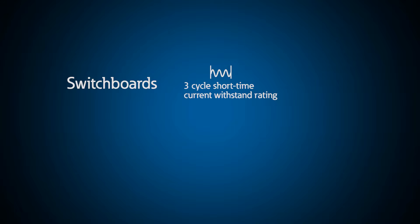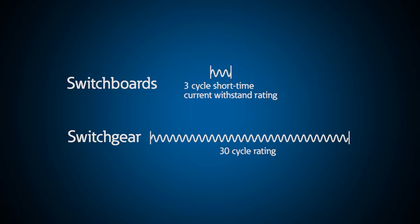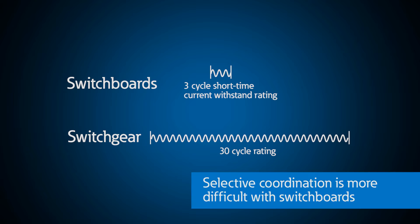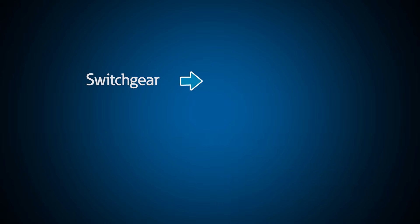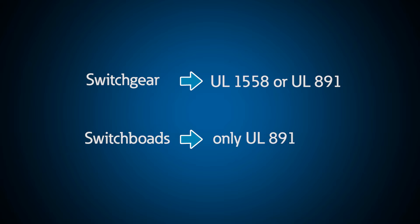Switchboards only have a three-cycle short time current withstand rating versus a 30-cycle rating for switchgear. This means that achieving selective coordination is more difficult since short time delays cannot be programmed to provide time for circuit breakers farther downstream to clear faults. Note that UL1558 switchgear can be classified UL1558 or UL891, which is the standard for switchboards, but switchboards cannot be classified as UL1558.